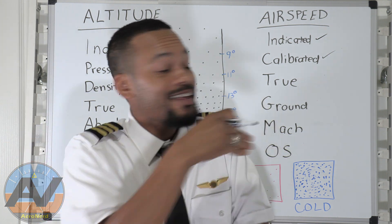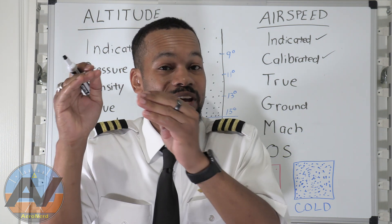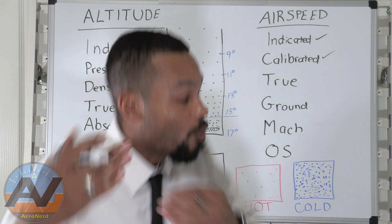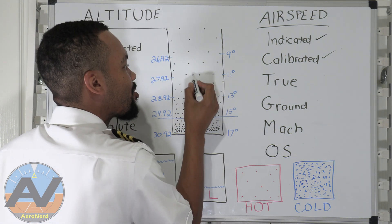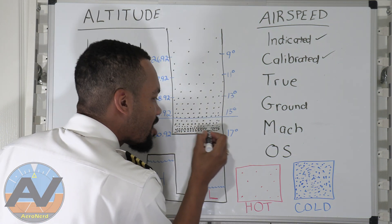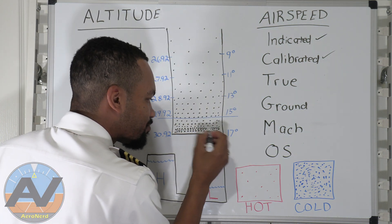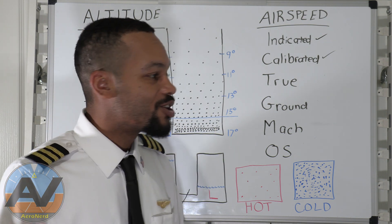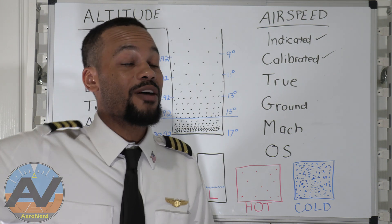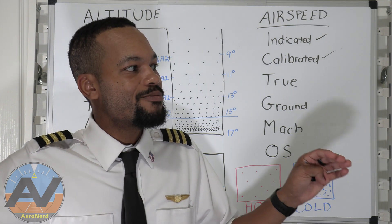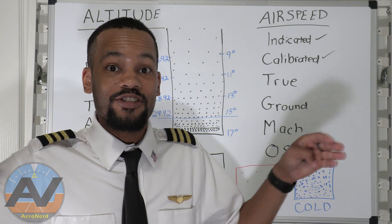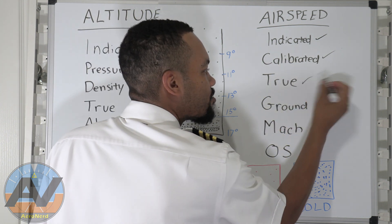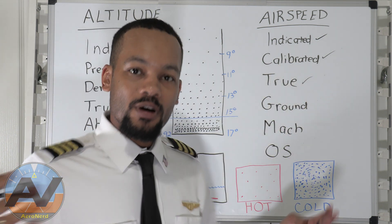What the cockpit is going to indicate is that you're going a little lower than you're actually really going. Why? Because once you're going higher, you don't have all these air molecules pulling you back — that's called parasitic drag. You don't have as much parasitic drag up there because you have fewer air molecules, so you're actually able to travel faster through the air. And that is what true airspeed is.